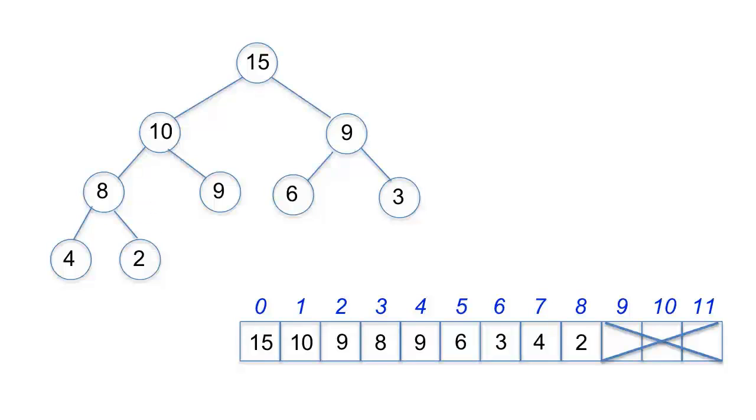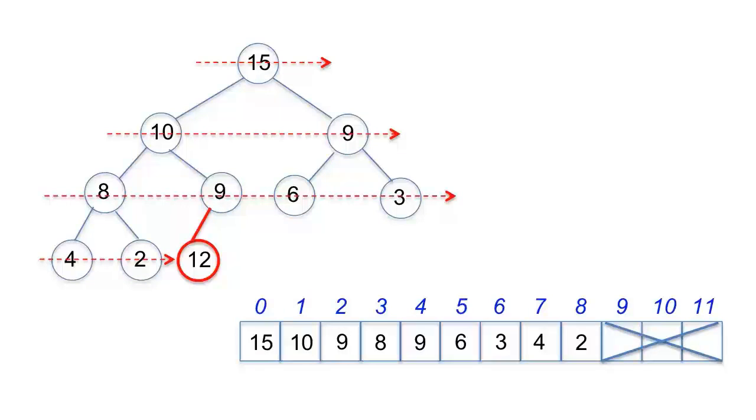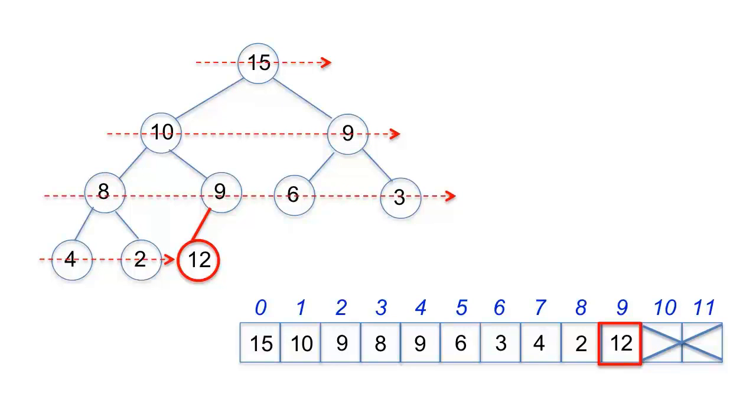Here's an example of sift-up. The heap items are in an array in which there is room to add three more items. When 12 is added, a new node is created after the rightmost node at the last level, and this node becomes the left child of node 9. Since items are stored in level order sequence in the array, the new item 12 is added to the end of the array. Let's use index k to track the location of 12, which is to be sifted up.